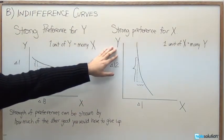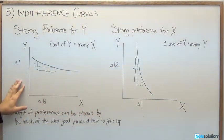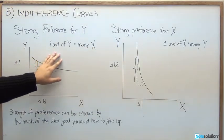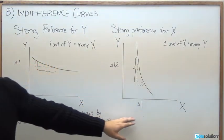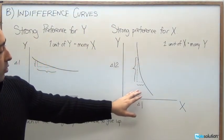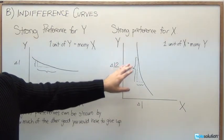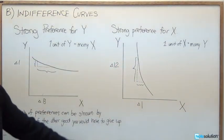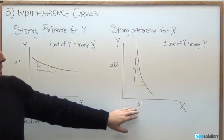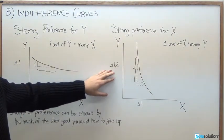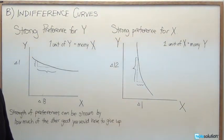On the right here, we've got a strong preference for X. It's just the opposite of the strong preference for Y situation. One unit of good X equals many units of good Y. In this case, if we give up one unit of good X, we would need 12 units of good Y to remain on the same utility curve.